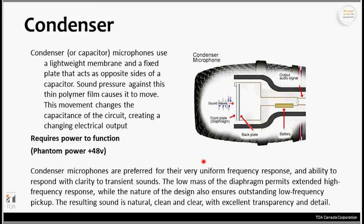A condenser is a little bit different. Condenser or capacitor microphones have a lightweight membrane and a fixed plate that act as opposite sides of a capacitor. Sound pressure against this small polymer film causes it to move, changing the capacitance of the circuit and creating a changing electrical output. One important thing to be aware of is that a condenser microphone requires power to work — usually up to about 48 volts, which is considered phantom power. If you hook up a microphone and can't get any output, and your cables are good, chances are it requires phantom power, usually enabled via a button on the mixer or a software setting.